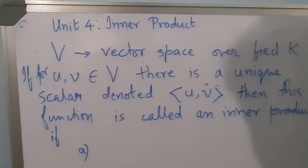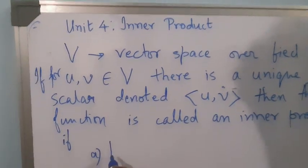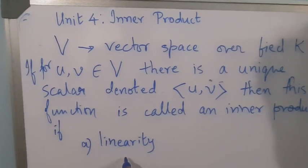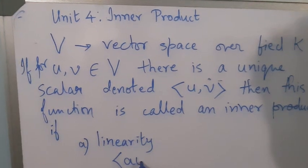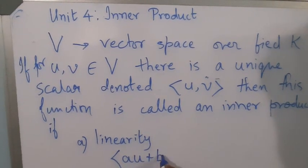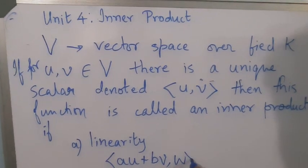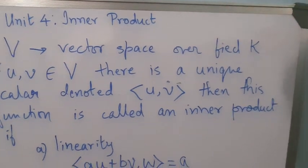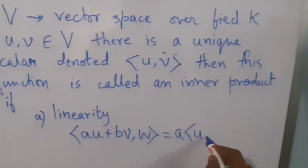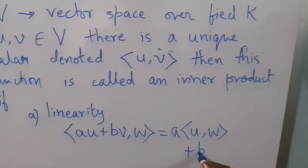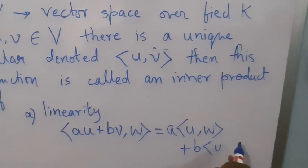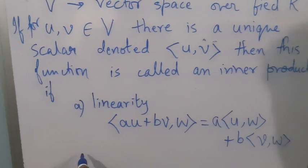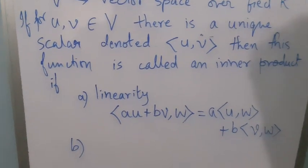The first condition is the linearity property. That is, the inner product of (aU + bV) with W should be a times the inner product of (U, W) plus b times the inner product of (V, W).